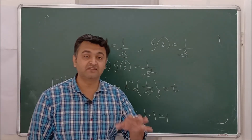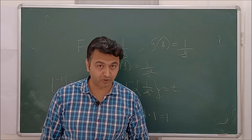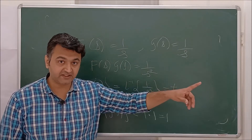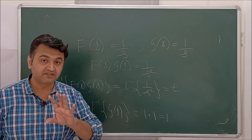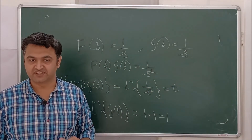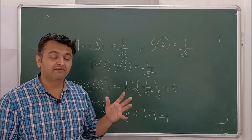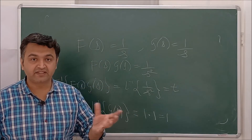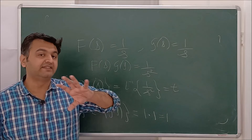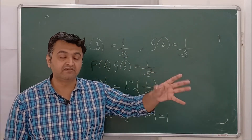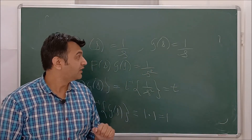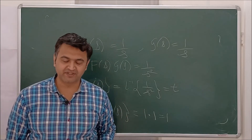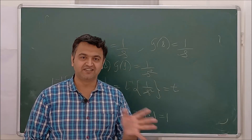So Laplace inverse doesn't behave well with the product, but it does behave well with vector addition and scalar multiplication — that's why when solving problems using Laplace and taking the inverse, we can directly take the inverses inside. I hope the proof is clear; if you have any doubts you can ask in the comment section. Thank you.